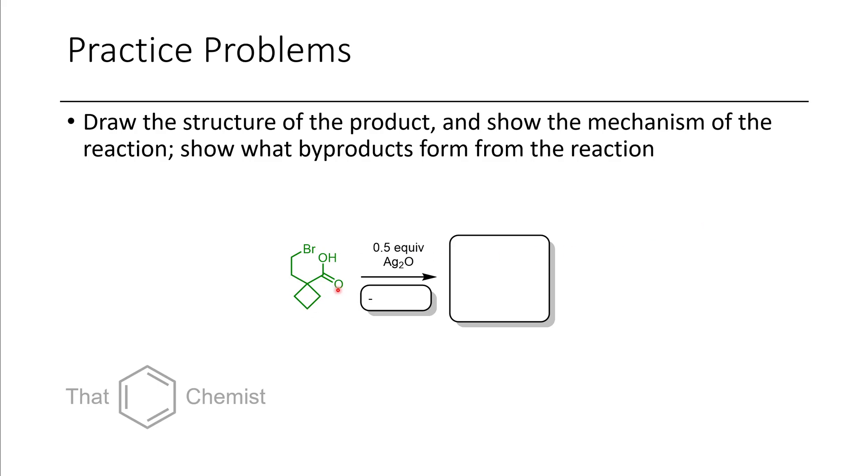In this question, I give you a carboxylic acid and tell you it's treated with silver oxide. I asked what byproducts form, what does the product look like, and by what mechanism does the reaction occur. The product of this reaction is this lactone here. A lactone is just a cyclic ester, and because the ester is contained within a ring, this is a lactone.